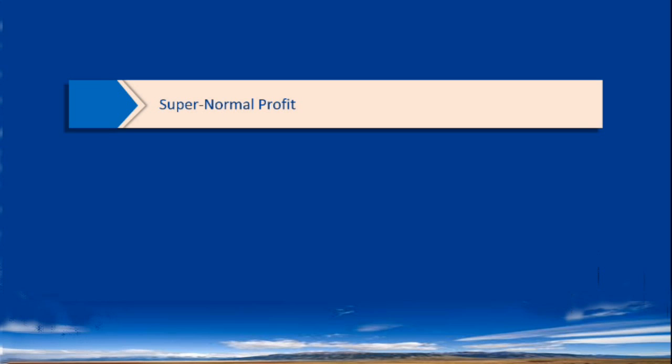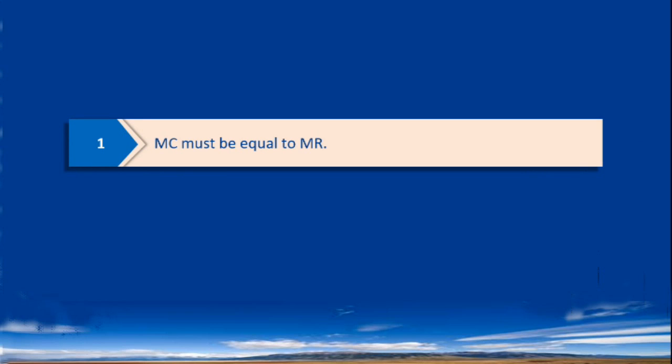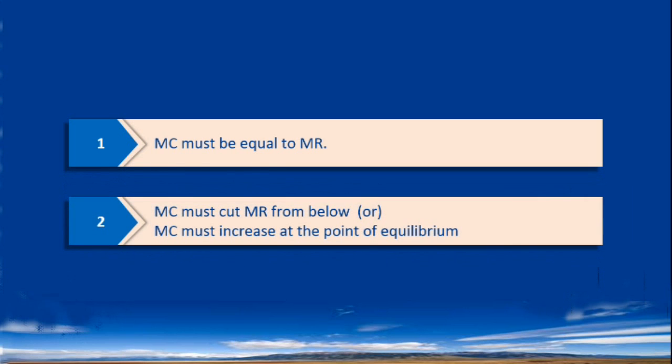For a firm to be in equilibrium, it has to satisfy two conditions. First, Marginal Cost must be equal to Marginal Revenue. Second, Marginal Cost curve must cut the Marginal Revenue curve from below. Or, Marginal Cost must increase at the point of equilibrium.